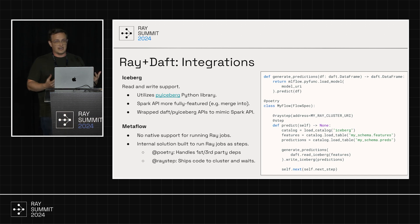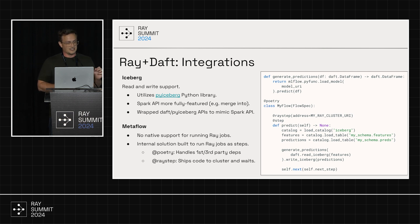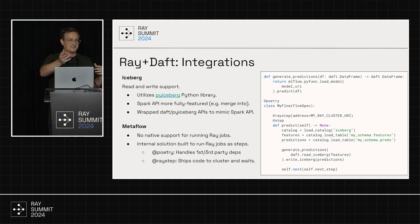For integrations, we needed it to integrate with all of our tooling. The team has been putting a lot of work into read and write support using PyIceberg under the hood. It's not as fully featured as Spark's API — things like merge-into and schema evolution — but we were able to wrap Daft and PyIceberg APIs to effectively get to that stage. Our ML infrastructure team also built custom plug-ins for Metaflow so we could easily package up our local and third-party dependencies, ship them off to a Ray cluster, let it run, and move on to the next step.